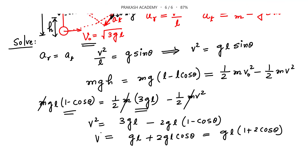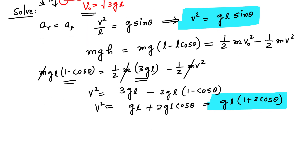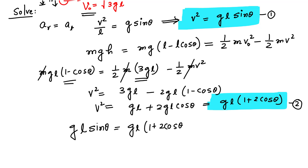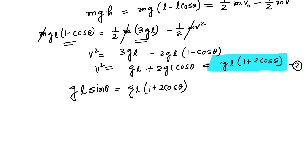So V² = gL(1 + 2cos(θ)). But from our earlier equation, V² = gL·sin(θ). Since both expressions equal V², we can set them equal: gL·sin(θ) = gL(1 + 2cos(θ)), which simplifies to sin(θ) = 1 + 2cos(θ).